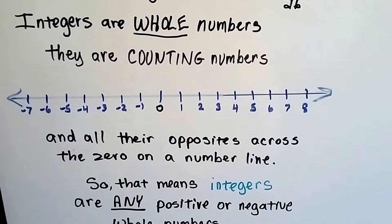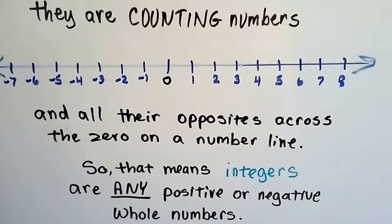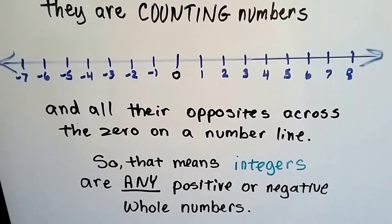So on a number line, on either side is zero, on the left side and on the right side. On the left side are the negative numbers and on the right side are the positive numbers.